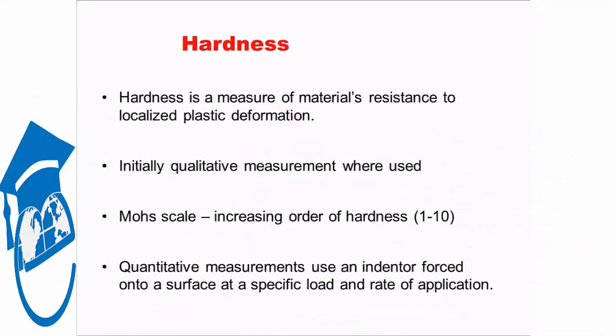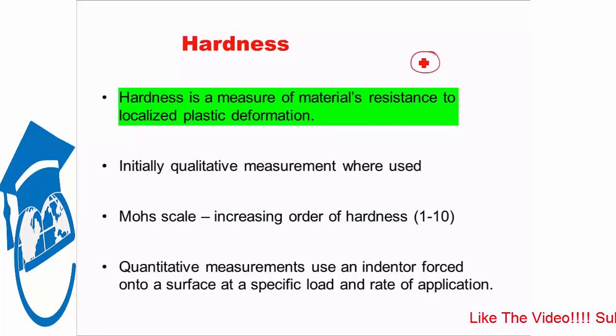Now how do we define hardness? Hardness is basically a measure of a material's resistance to localized plastic deformation. This means if you have a material and you try to apply a load at a very small location, at a very pinpoint location, then the resistance of the material to any plastic transformation on this pinpoint localized region is known as hardness.